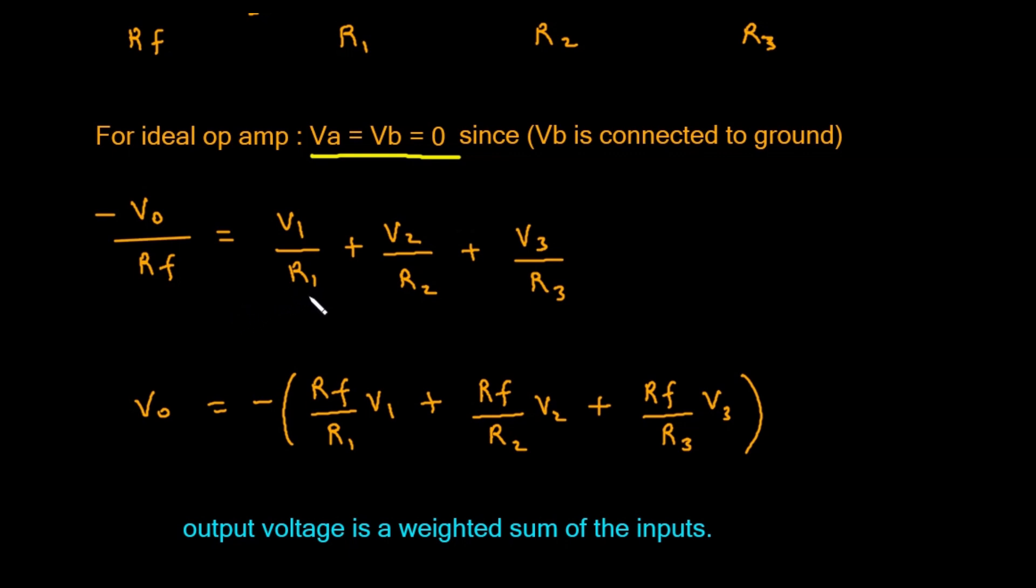We are so close to our final answer. Our goal is to find a formula for the output voltage, Vo. To get Vo by itself, all we need to do is multiply both sides of this equation by negative Rf. When we do that, we arrive at the final, elegant equation for the summing amplifier.